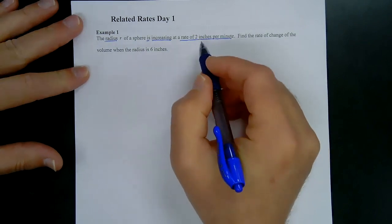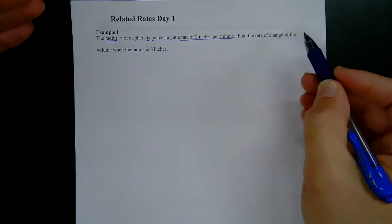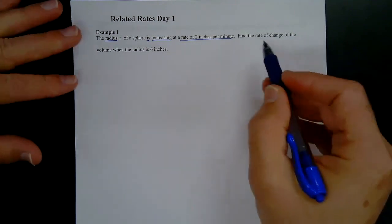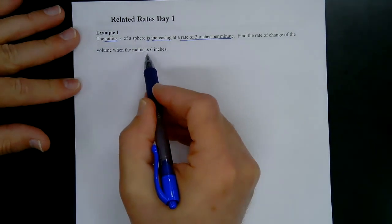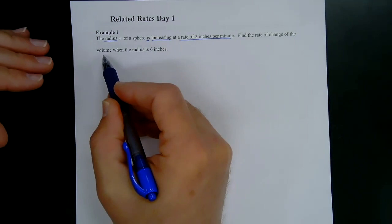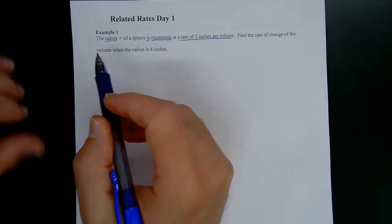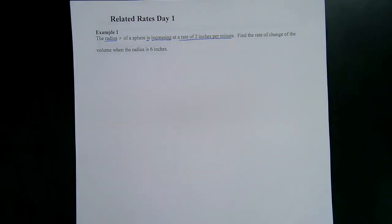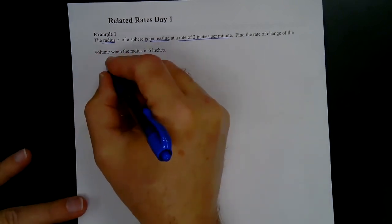We want to find the rate of change — how fast is the next quantity changing. Find the rate of change of the volume when the radius is six inches. We want to find how the volume is changing, which is the derivative of the volume. We need a relationship that relates volume and radius of a sphere.